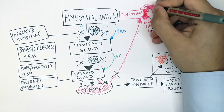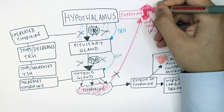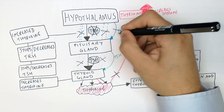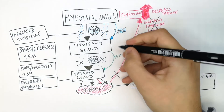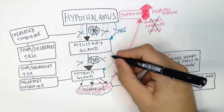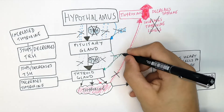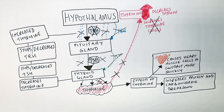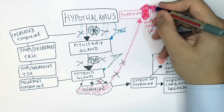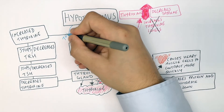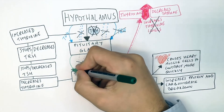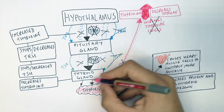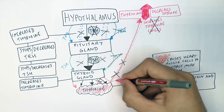Thyroxin levels will then increase, which the hypothalamus detects, causing it to stop producing TRH. This causes the pituitary gland to stop secreting TSH, meaning the thyroid gland produces less thyroxin. When thyroxin levels decrease again, the hypothalamus produces TRH, the pituitary secretes TSH, and the thyroid gland produces more thyroxin — maintaining homeostasis.